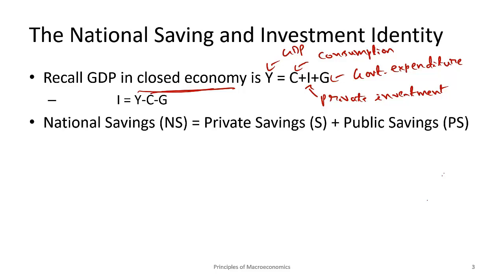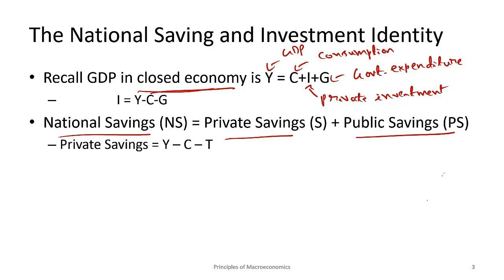National savings equals private savings plus public savings. Private savings is the income left over after paying for consumption and taxes — once you pay your consumption and taxes, whatever income remains is your private savings. Public savings is taxes minus government expenditure. For a government, taxes are a source of revenue, whereas G or government expenditure represents expenses. So the difference between revenue and expenses is public savings — that is, savings done by the government.